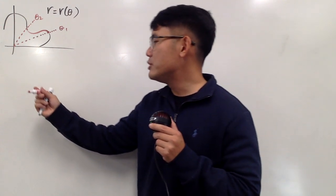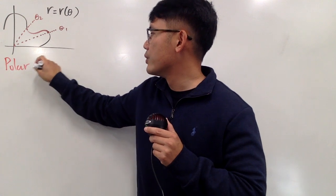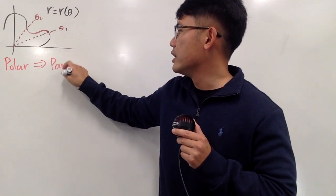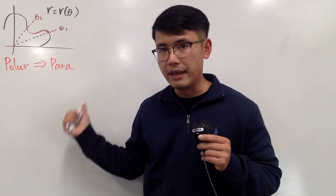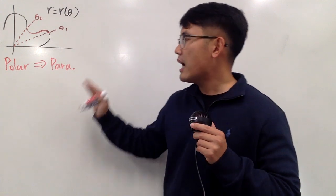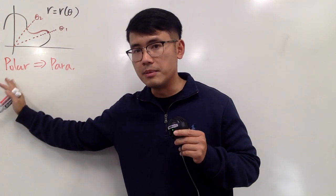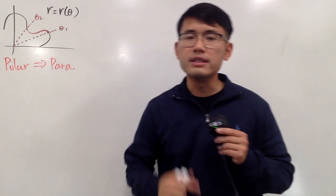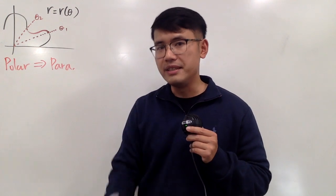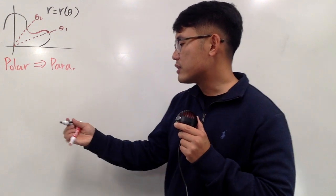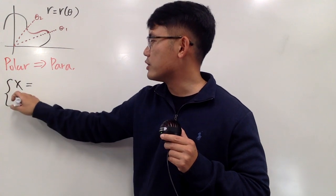Let me show you how to go from polar to parametric equation — we can always make this happen easily. Not all parametric equations can be written in terms of polar equations easily, but we can always go from polar to parametric easily. To do so, we need to get the x and y equations.